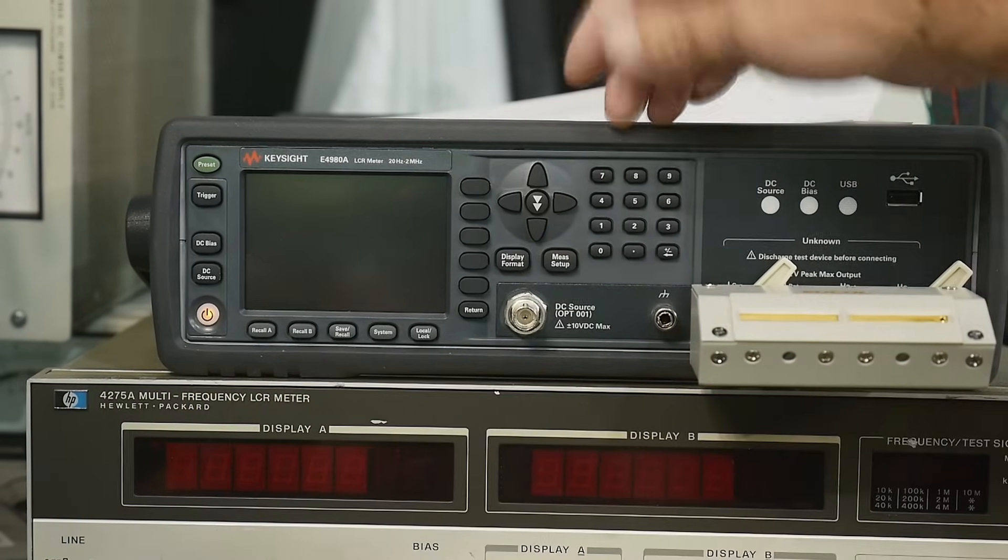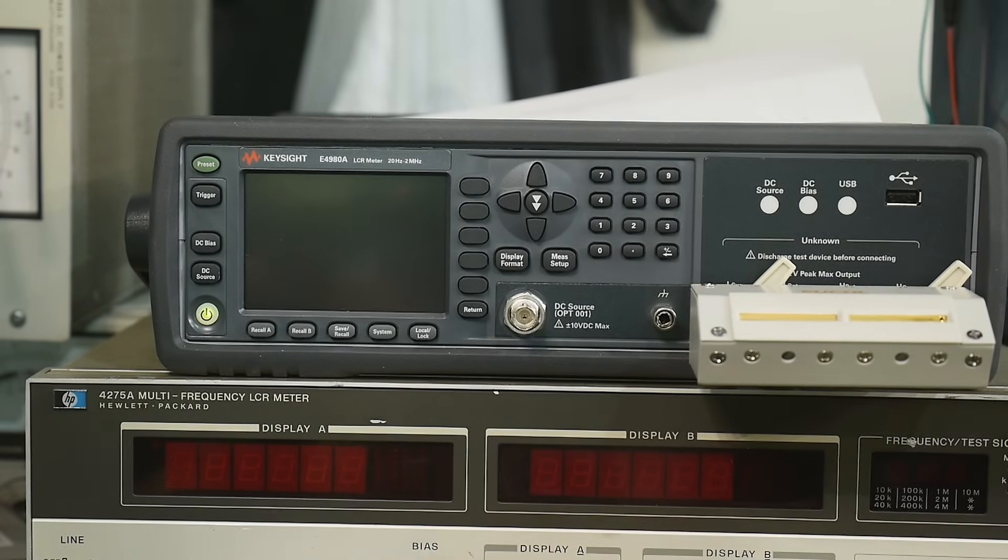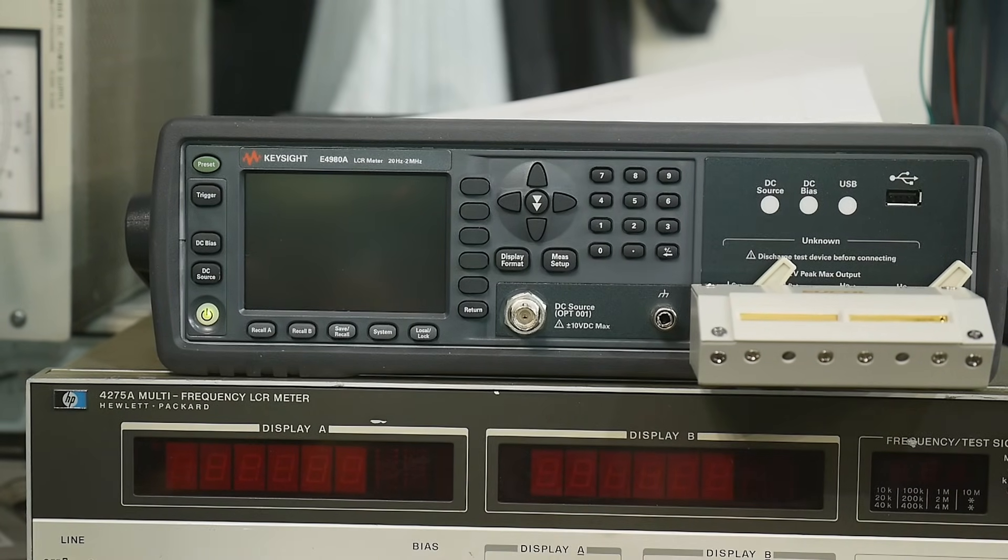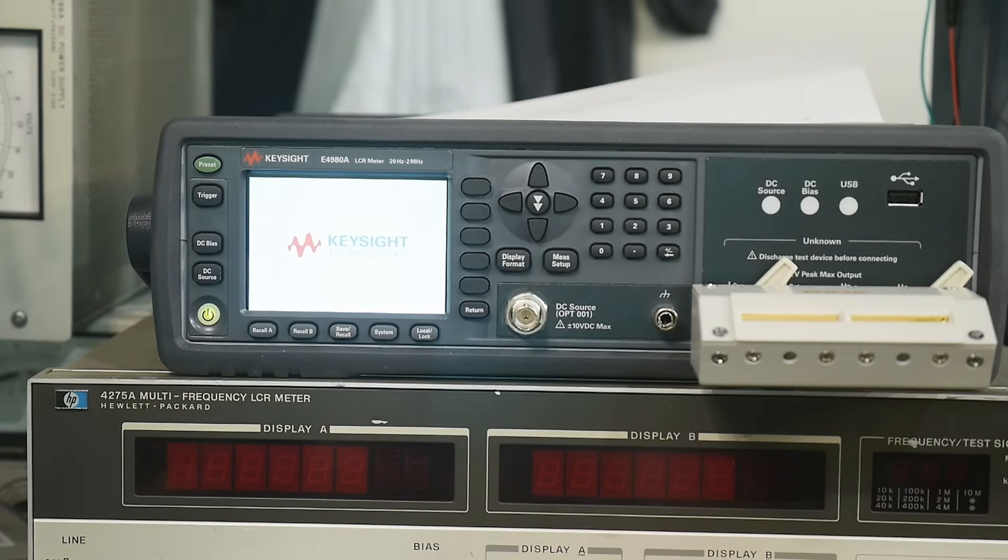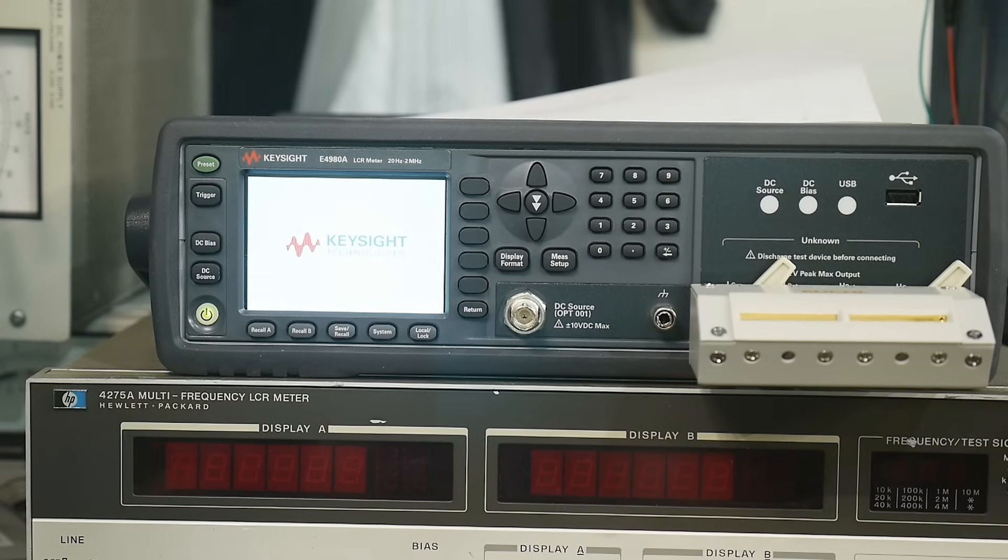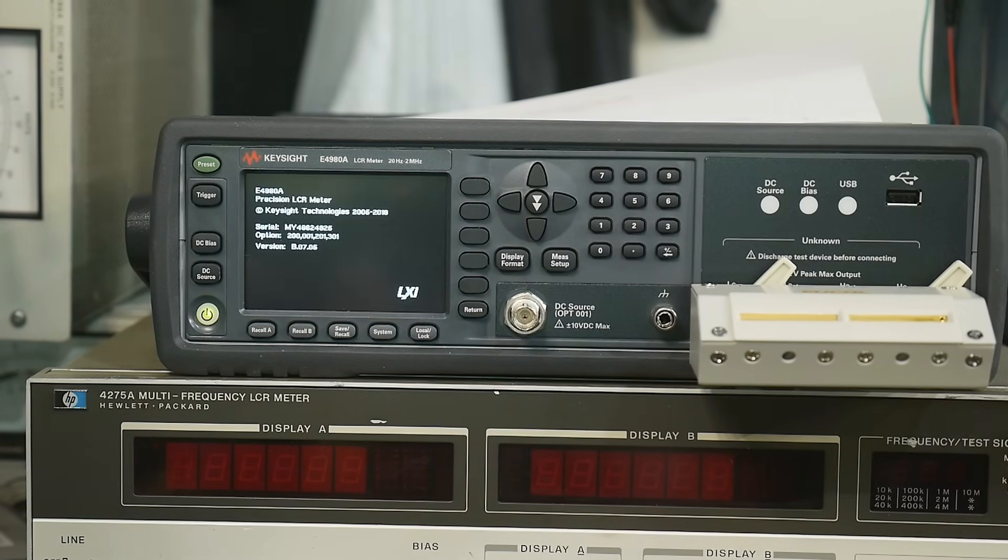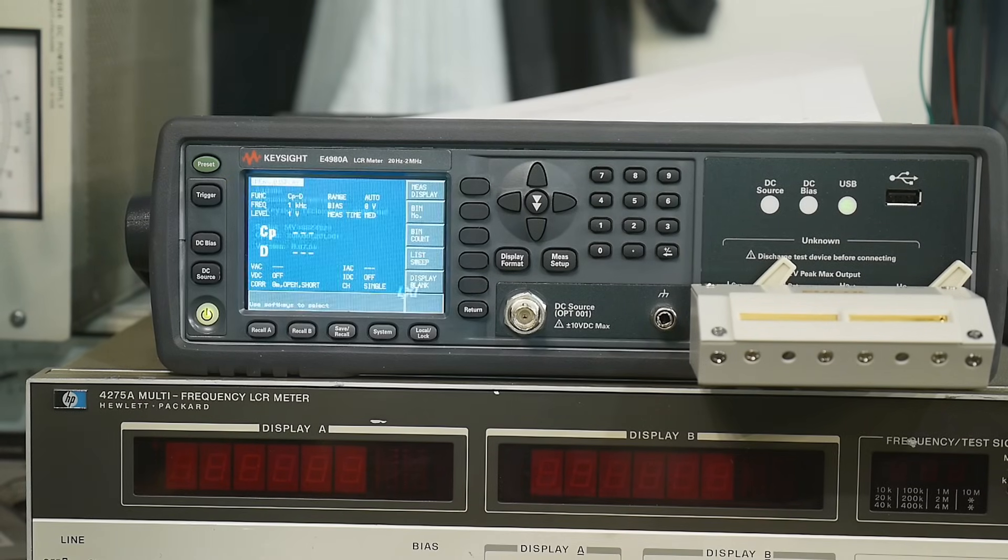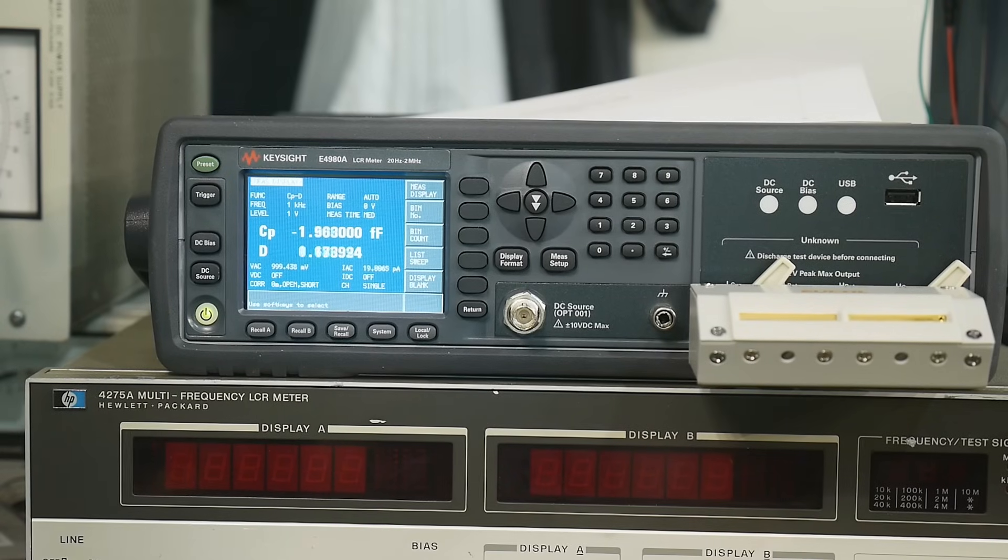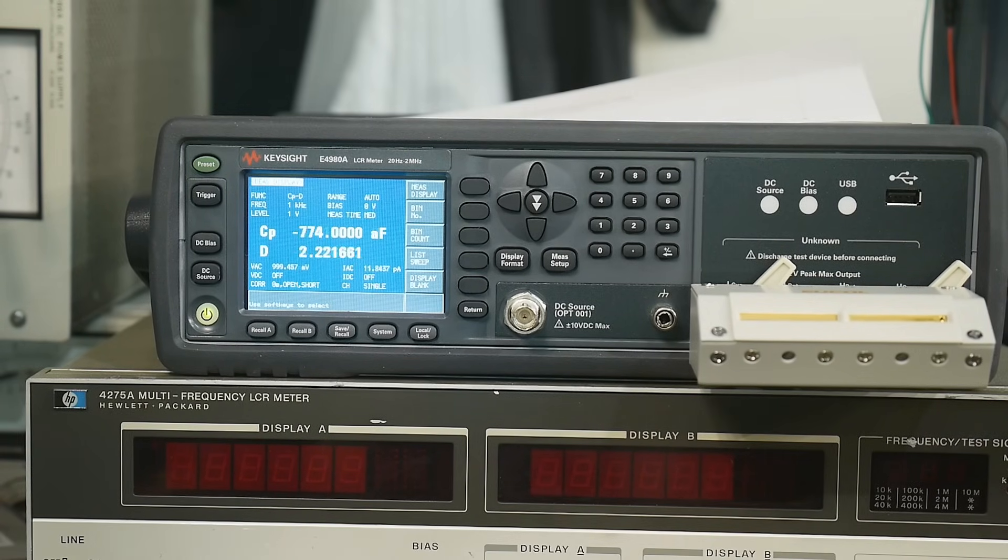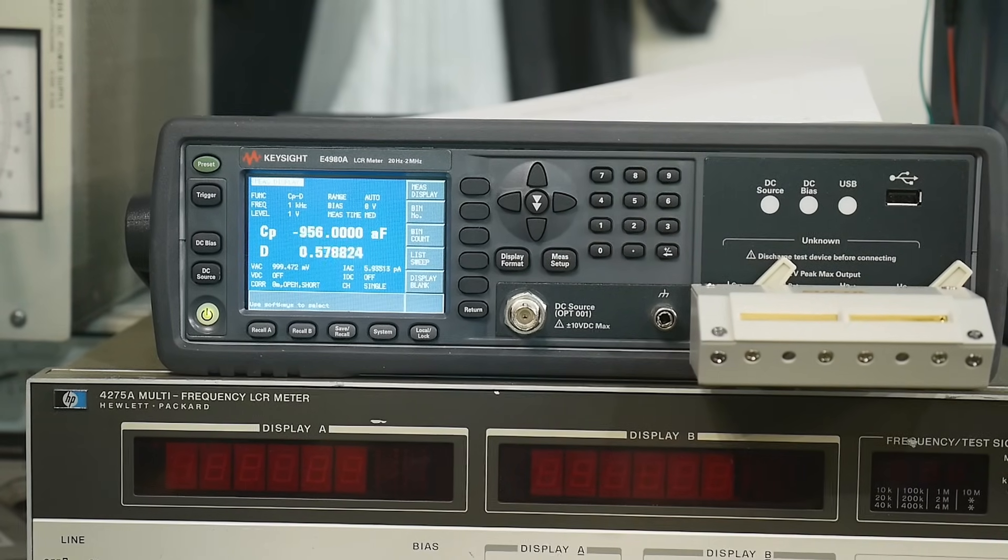All right, since I have this nice new instrument here, I thought I'd readdress a video that I did a while back, which was on variable capacitance diodes used in voltage control oscillators and stuff. So they're called varicaps or varactors. They're specific diodes that you use whose capacitance changes with bias voltage.